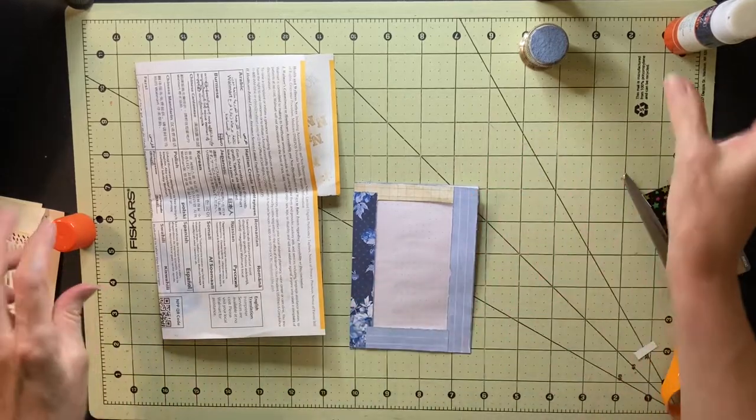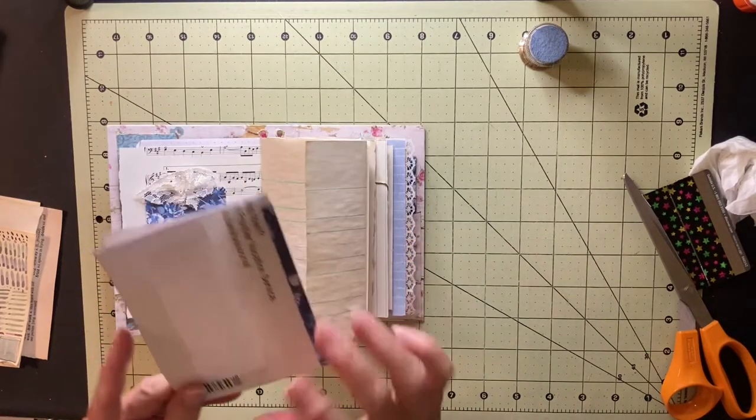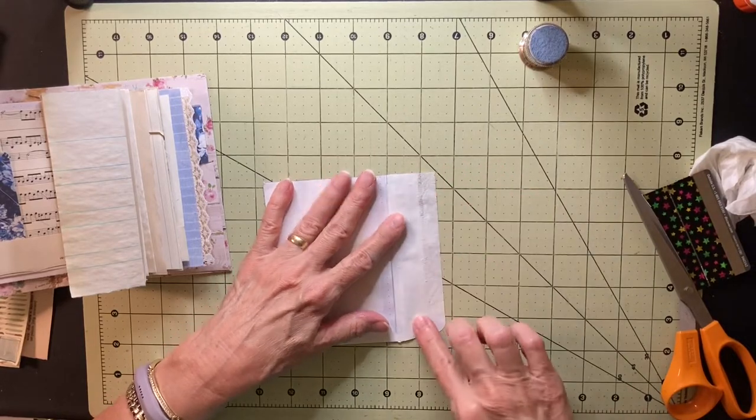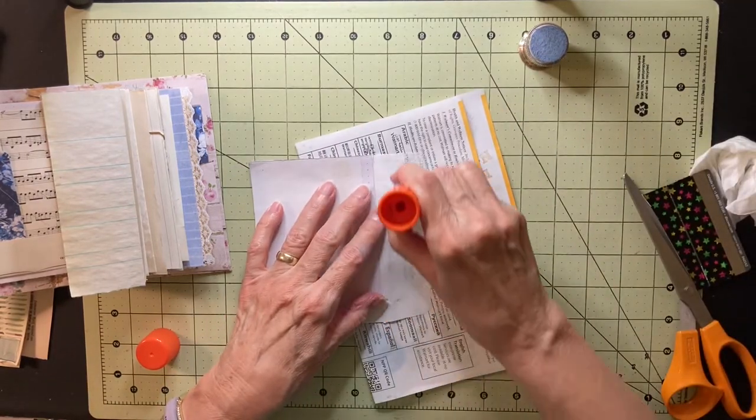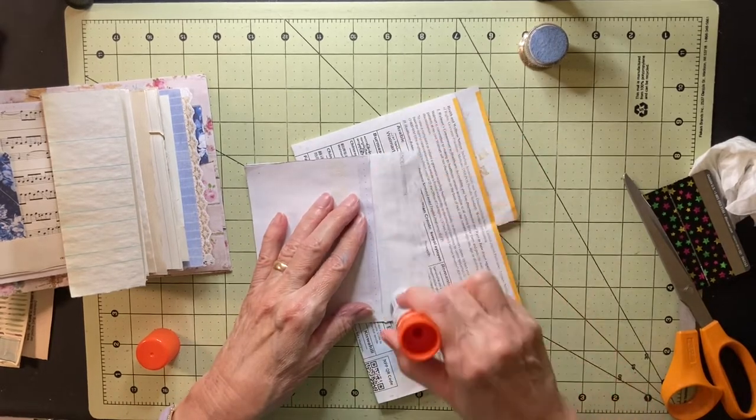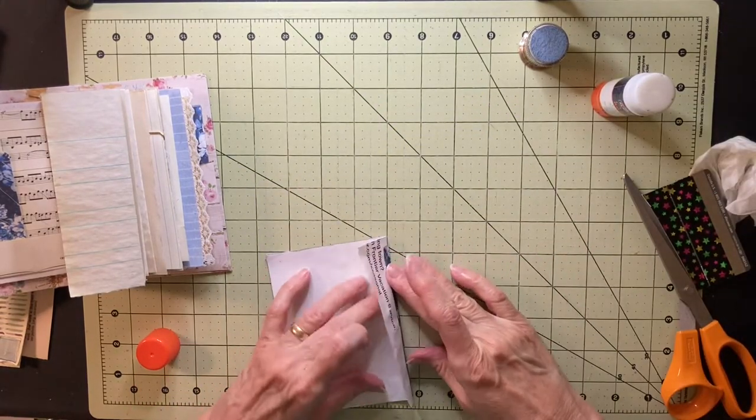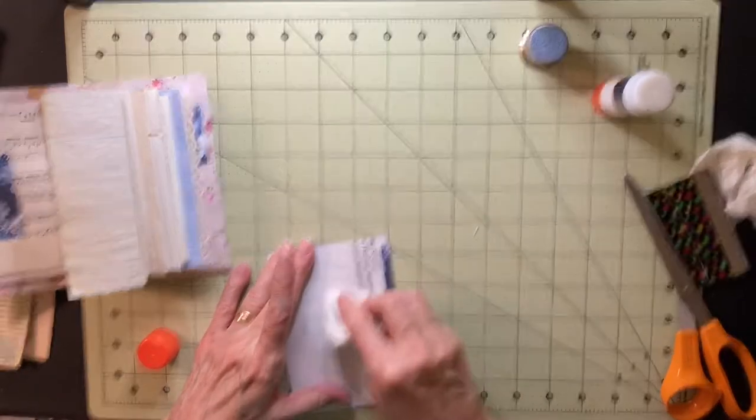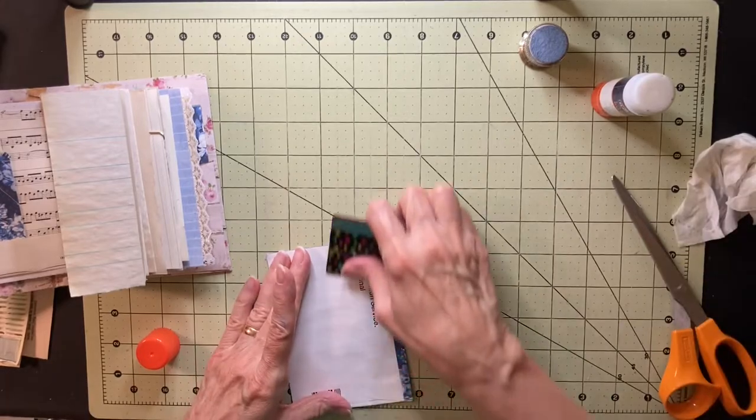That is that side. I still haven't decided what I'm going to put in that pocket, but I will find something. It's going to go this way into the book. I need to glue this down. And I think I'm just going to glue to about there and just leave the rest of it so it has a little more room in there.